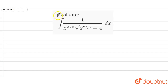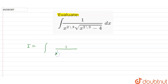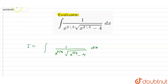Hello guys, the question is we have to evaluate the given integral. Let this be I. So I is the integral of 1 upon x raised to power 2/3 into under root of x raised to power 2/3 minus 4, with respect to dx.